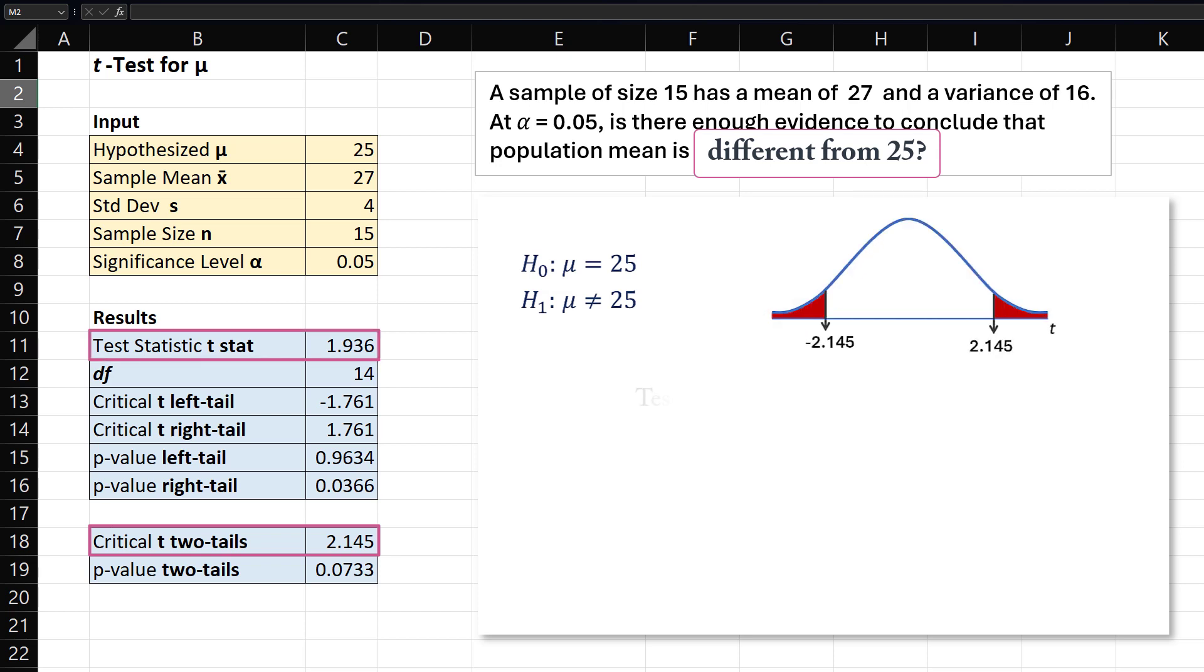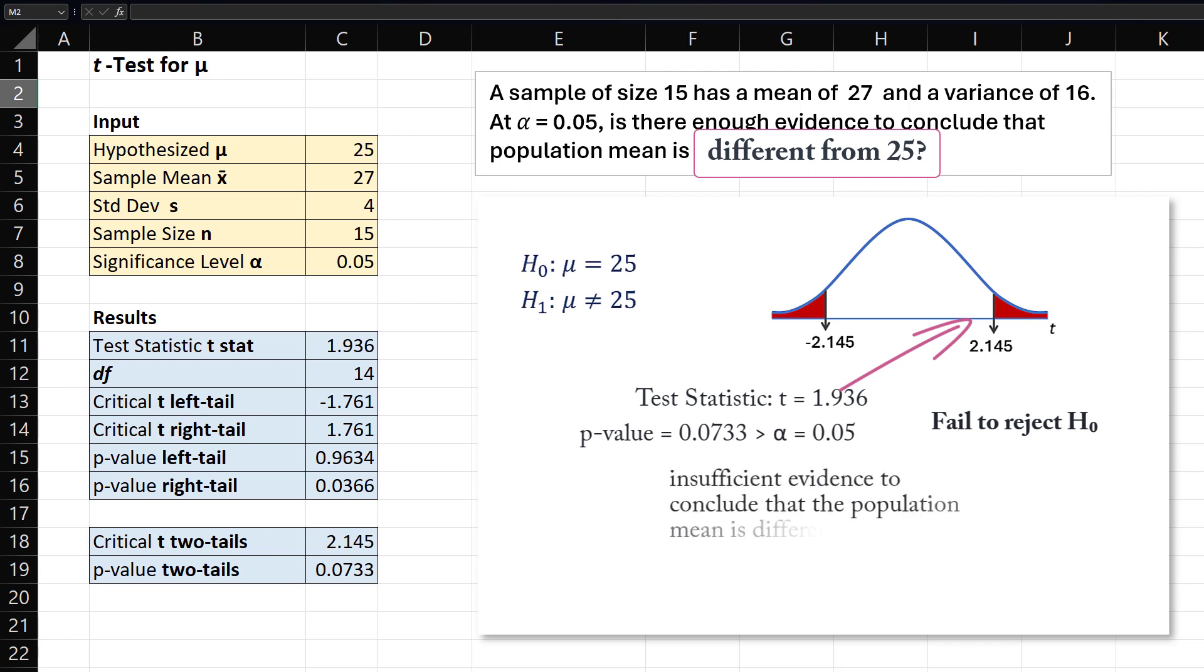Our test statistic of 1.936 does not fall into the rejection region. The p-value is also greater than 0.05, indicating we should fail to reject the null hypothesis. We therefore cannot conclude that the population mean differs from 25 at alpha equals 0.05.